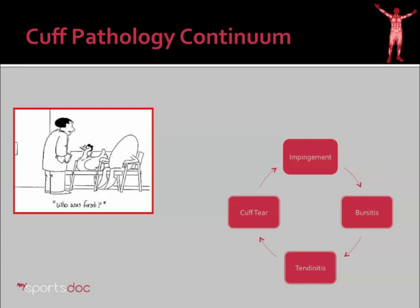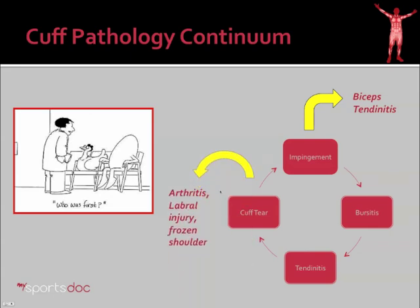Shoulder pathology is not that easy to define, and the reason is what I call the cuff pathology continuum. There's a cycle of pathology that can start anywhere on that cycle. If we start with some impingement — where the ball of the shoulder rides up into the acromion — you start to get some pinching. That leads to bursitis, which can lead to inflammation of the cuff, or tendonitis, and ultimately tearing of the cuff. Then the cuff becomes weak, which allows the ball to slide up more as the deltoid pulls up, leading to more impingement, more bursitis, and so on. Additionally, you can spin off of this continuum and get other conditions like bicep tendonitis, arthritis, labral injury, frozen shoulder, or even neck pain.